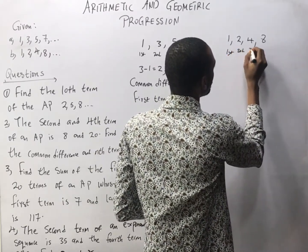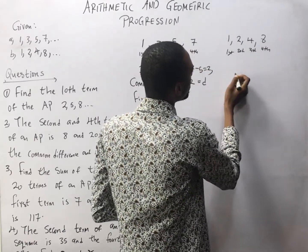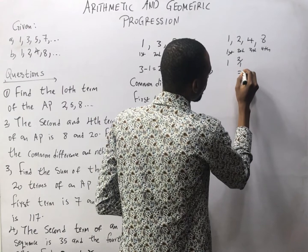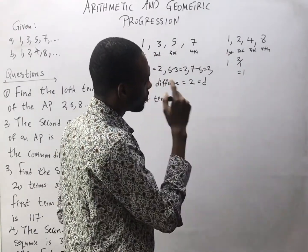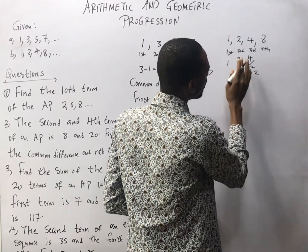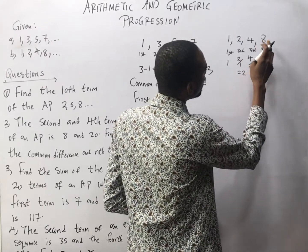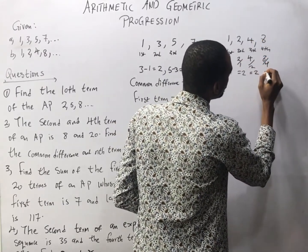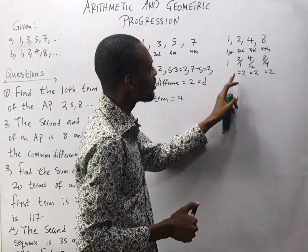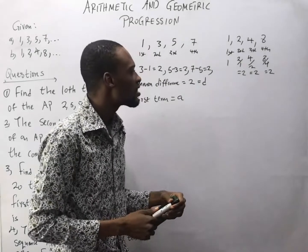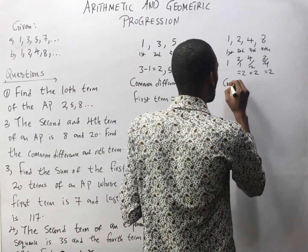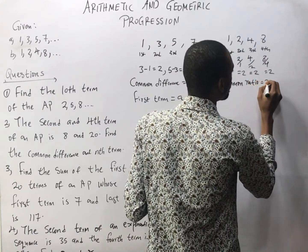So let's try something. This is the first, second, third, and fourth term. First term is 1. For the second term, if we say 2 divided by 1, this equals 2. Third term divided by second term: 4 divided by 2 equals 2. So when you divide, you have a ratio. Here we have a common ratio. Common ratio equals 2 and it equals R.